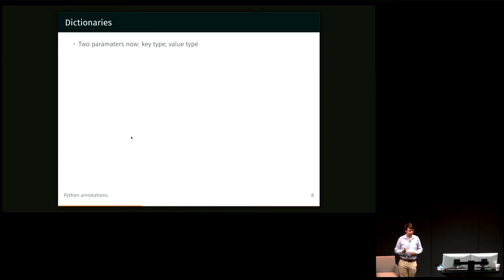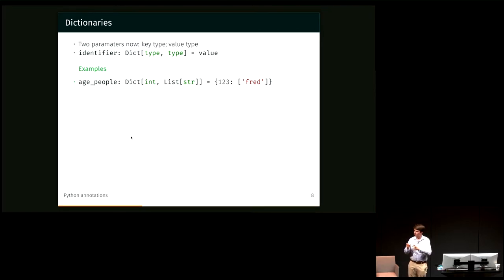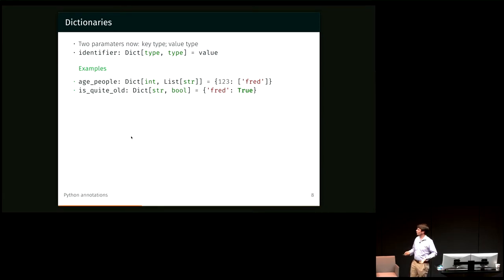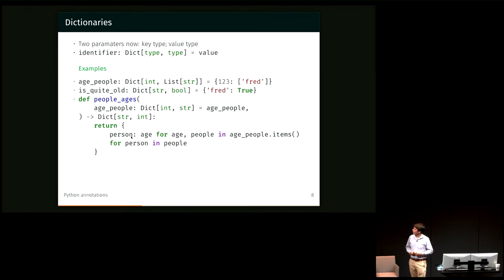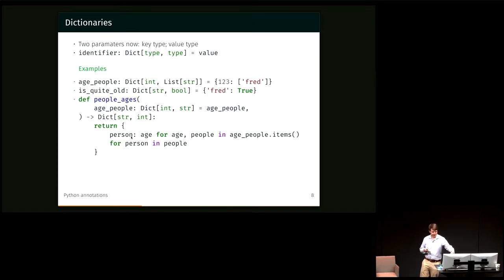Dictionaries. So now, again, like sets and tuples, have two types, but rather than referring to the same sort of thing, they're, as you might guess, referring to the key type and the value type. So if identifier dict type type is value, so the age of people is a dictionary that maps from a certain age to a list of people that have that age. So we'd write dict int list string. is_quite_old goes from string to bool, so Fred, if he's 123, he's quite old, so we put him in our is_quite_old dict. And people_ages is a function that then reverses that age_people dict.